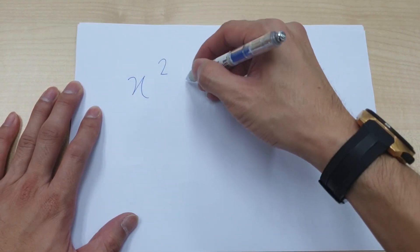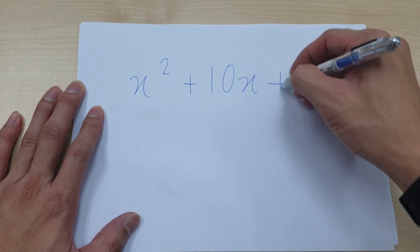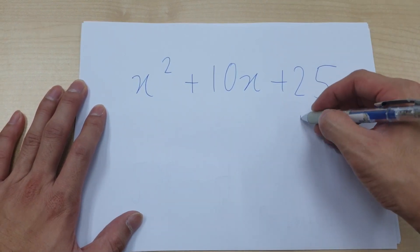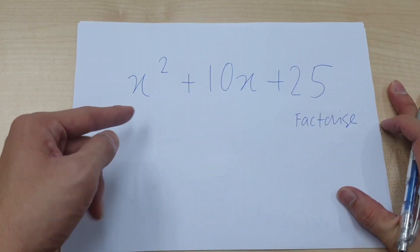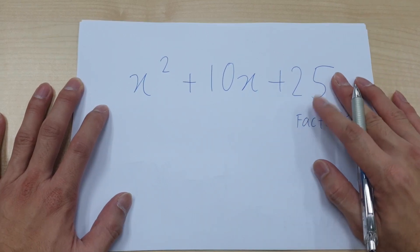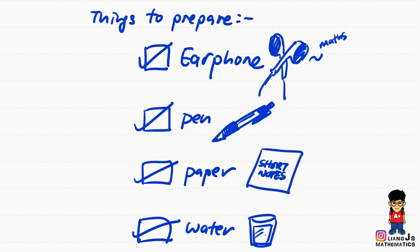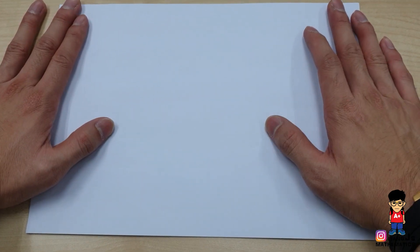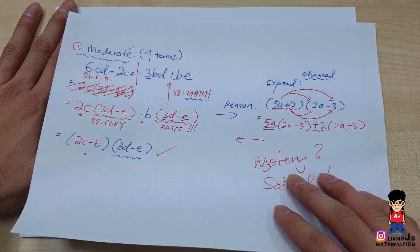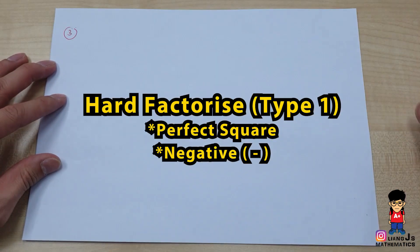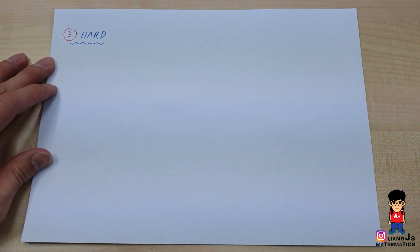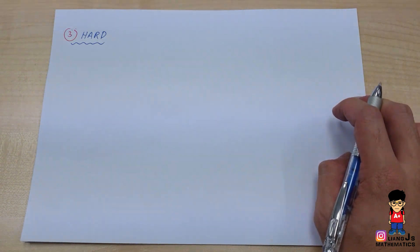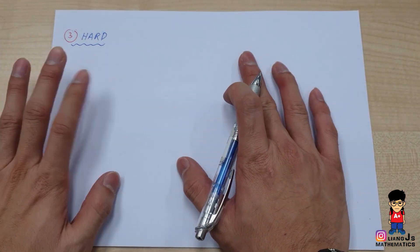x squared plus 10x plus 25 — factorize. Teacher, teacher, how to factorize? Don't know. Hi guys, liangjin mathematics here where we talk about the next part of your factorization which is not moderate, but now we go to the third one which is the hard version of factorize. Hard doesn't mean the difficulty — it's about categorizing my factorization methods so that you can easily recognize them.